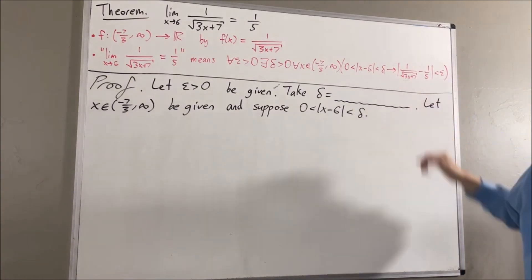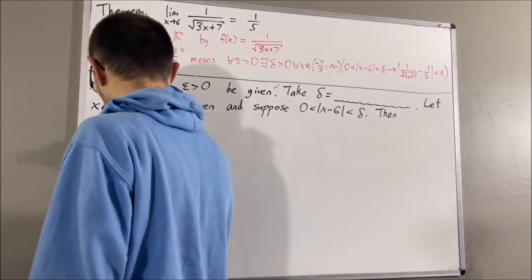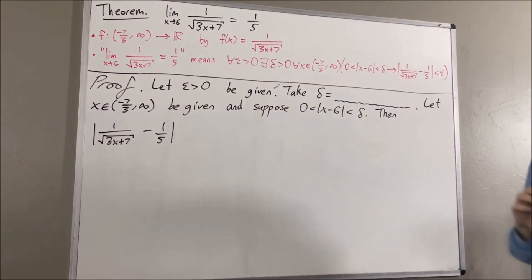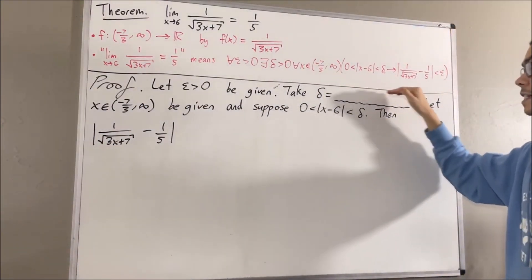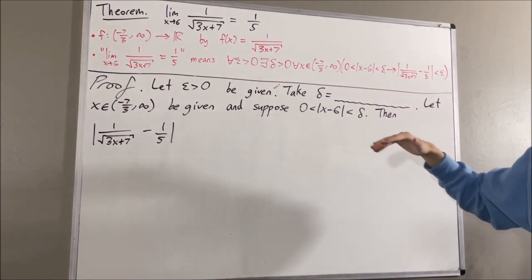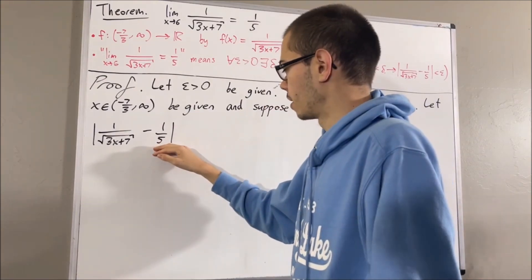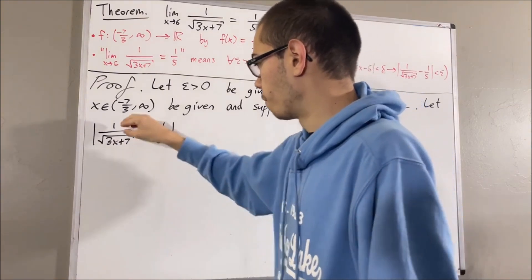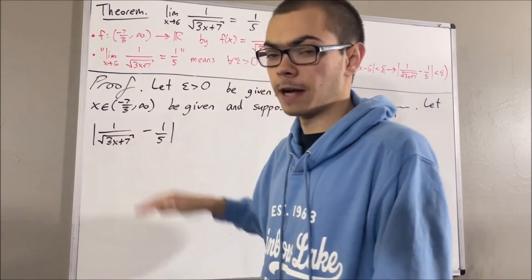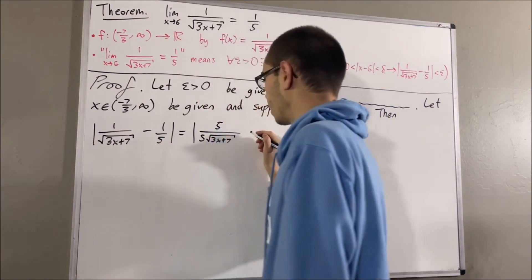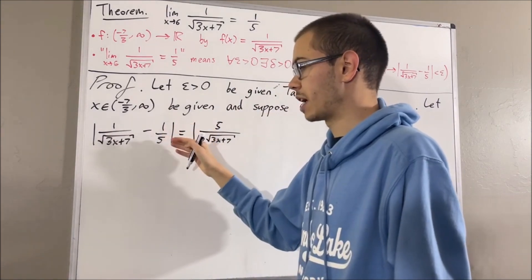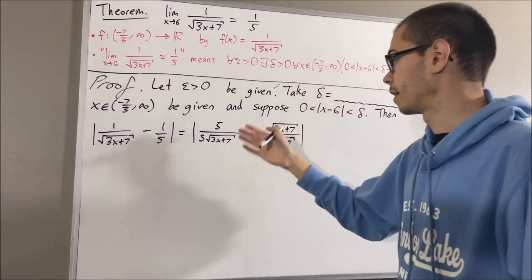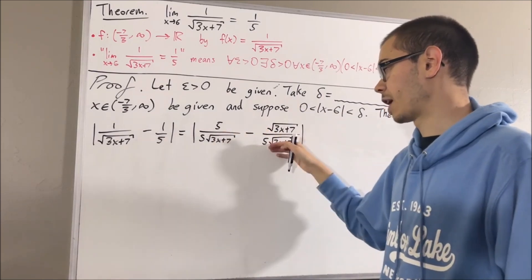Let's start out by writing the left-hand side of this inequality. The whole goal is to make this guy less than epsilon, and in the process of doing so, we're going to figure out what we should define delta to be. First, let's re-express this expression in a different way. We're going to combine these two fractions into a single fraction: for the first fraction, multiply both numerator and denominator by 5, and for the second fraction, multiply both numerator and denominator by the square root of 3x plus 7. Now that we have common denominators, we can combine them into a single fraction.